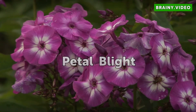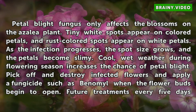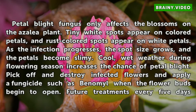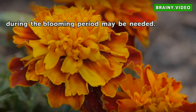Petal blight fungus only affects the blossoms on the azalea plant. Tiny white spots appear on colored petals, and rust-colored spots appear on white petals. As the infection progresses, the spot size grows and the petals become slimy. Cool, wet weather during flowering season increases the chance of petal blight. Pick off and destroy infected flowers and apply a fungicide such as benomyl when the flower buds begin to open. Future treatments every five days during the blooming period may be needed.